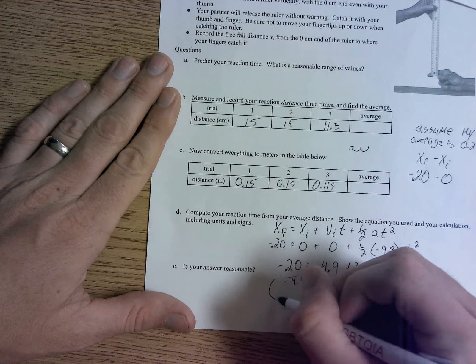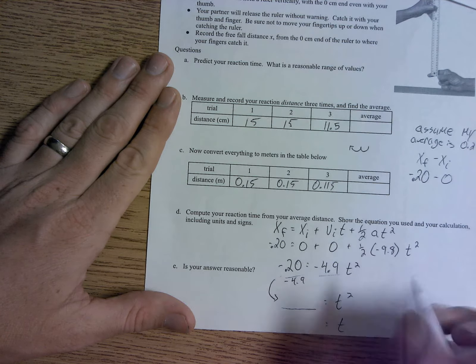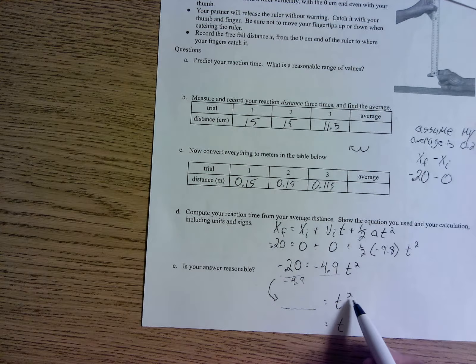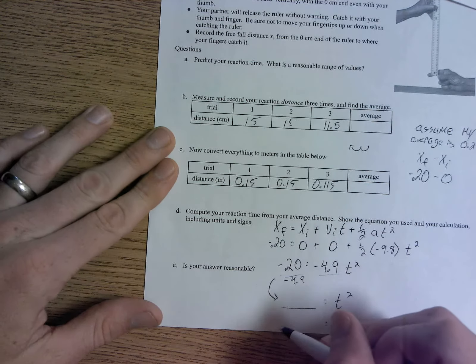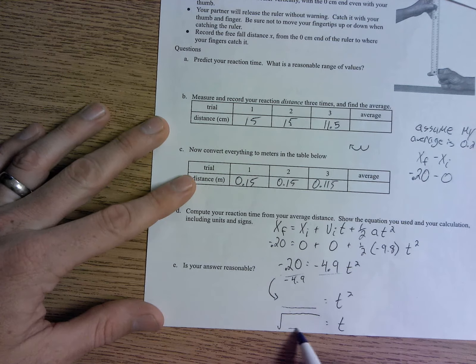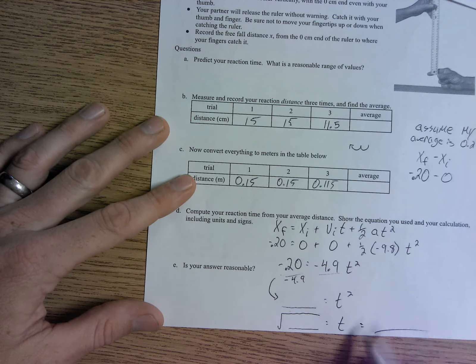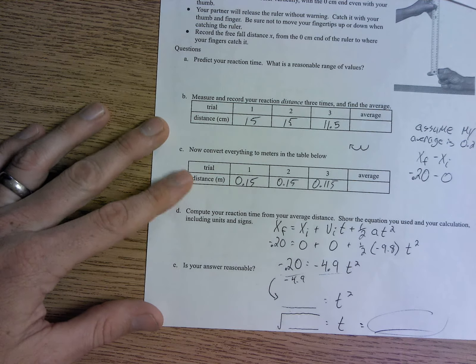Whatever that is is going to go here, right, and that's equal to t squared. Well, then we want to get t by itself. So in order to get rid of the squared, we're going to square root it. So we're going to square root whatever we got there, and that's going to be our final answer. Then we'll circle our final answer.